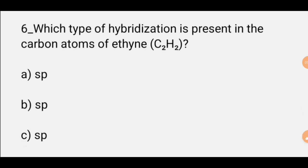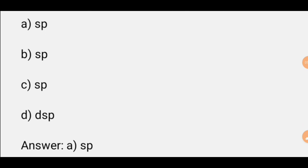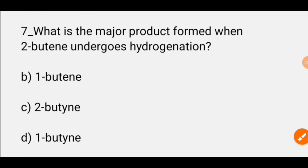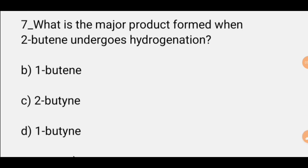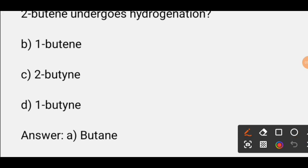MCQ number six: Which type of hybridization is present in the carbon atom of ethyne C2H2? Options are sp, sp2, sp3. The correct answer is option A, sp. MCQ number seven: What is the major product formed when 2-butene undergoes hydrogenation? The answer is butane.